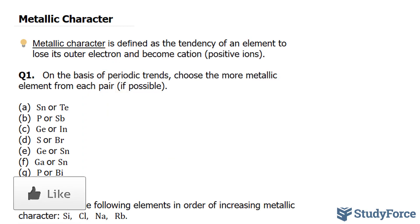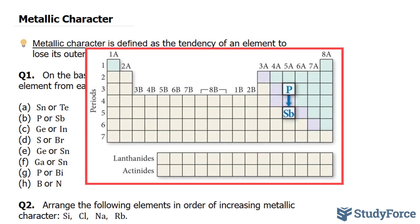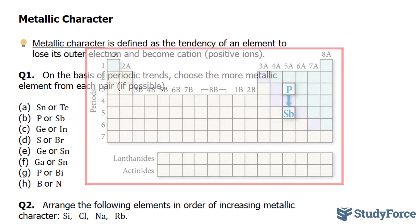Next, we will compare phosphorus and antimony. Antimony is more metallic than phosphorus because as you trace the path between them on the periodic table, you move down the column. Metallic character increases as you go down a column, so antimony is more metallic.